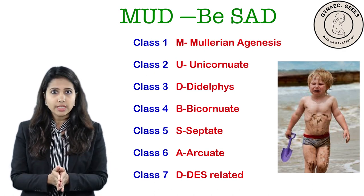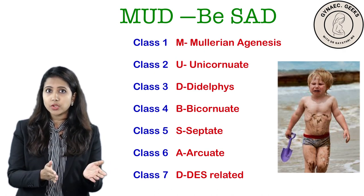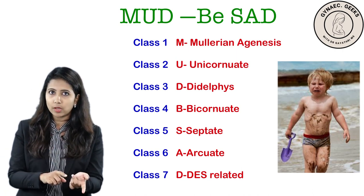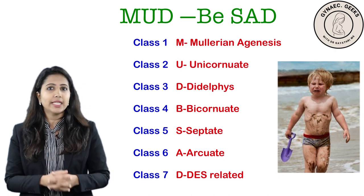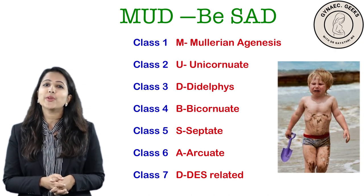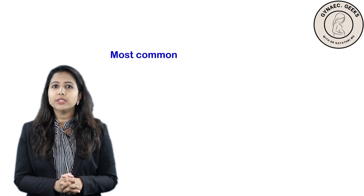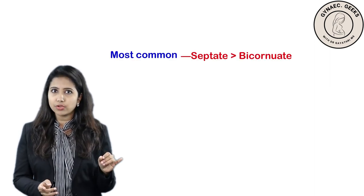This classification has often come as an exam question where they give you an anomaly and ask which class it belongs to, or the other way around — giving you a class and asking you to identify the anomaly. With this mnemonic, you can easily remember that. Now let's see the common one-liners that come from this topic.